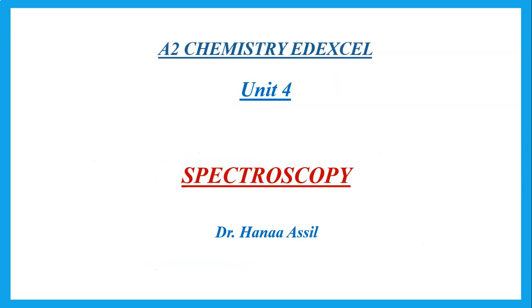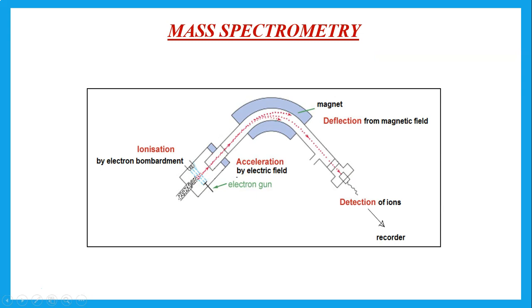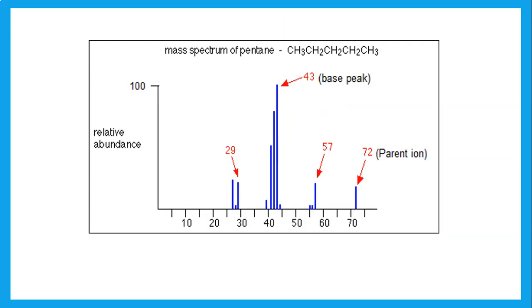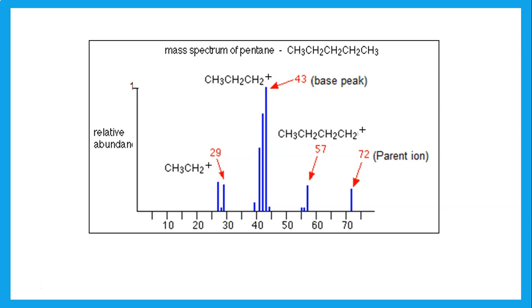Now we need to talk about spectroscopy. In mass spectrometry, we look at the mass spectrum and identify the highest m/z peak — for example, 72 for pentane. This is the parent ion peak and gives the molecular mass of the compound. The other peaks give the different fragments the compound may break into.